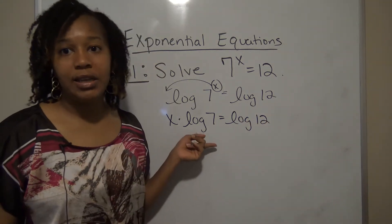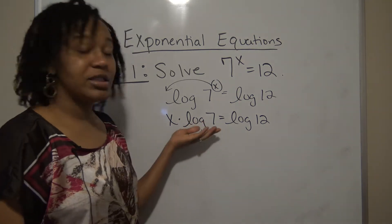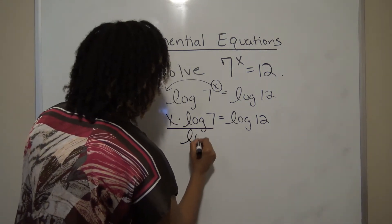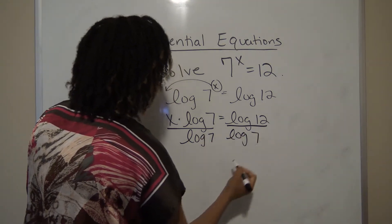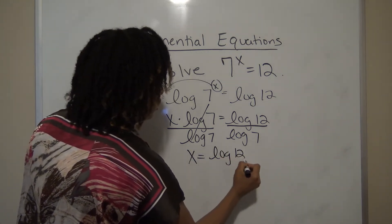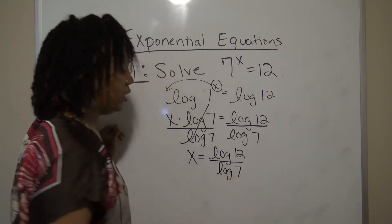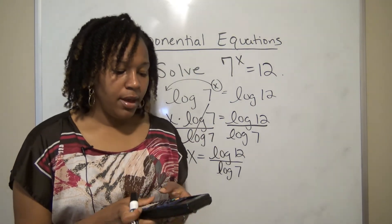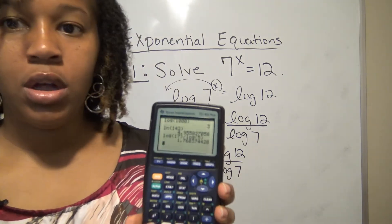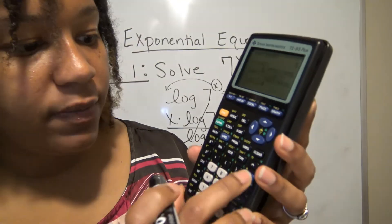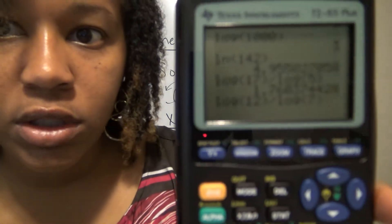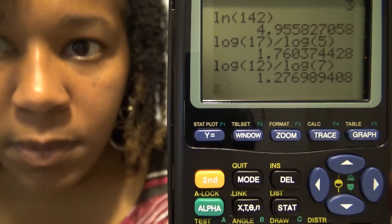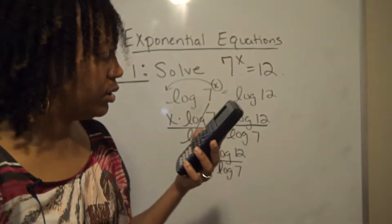Now we can easily solve for x. Since log(7) is just a number, we divide both sides by log(7), the log(7)s cancel, and we get x equals log(12) over log(7). That's the exact answer. For a decimal approximation, you just do log(12) divided by log(7) in your calculator, and you get approximately 1.277.